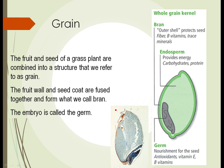The fruit and the seed of a grass plant are combined into a single structure, which we refer to as a grain. The fruit wall and the seed coat are fused together. Think of something like an apple, where the fruit wall is the outside peel and the seed coat covers the small seeds inside. In a grass plant, that whole structure is combined into one, and the fruit wall and seed coat fuse together to form a structure we call bran. The embryo inside is referred to as the germ — for instance, wheat germ is the embryo of the wheat plant.